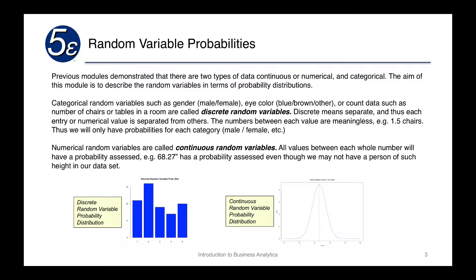On the right side, we have a continuous random variable probability distribution, which is a smooth curve giving you all of the individual points between every point. In this case, we have a normal distribution, where we see the mean in the middle at around 98.6, and every single point for human body temperature is assessed a relative probability.